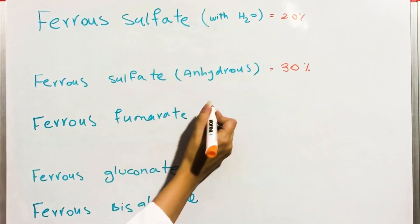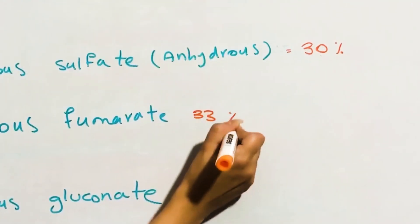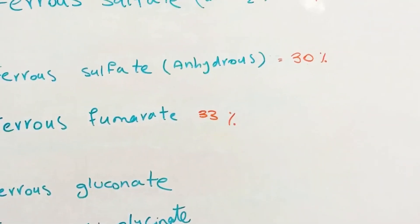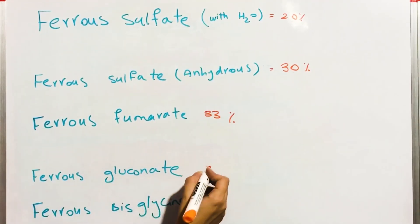Hydrous ferrous sulfate contains 20 percent elemental iron in it. Ferrous fumarate contains 33 percent elemental iron in it.